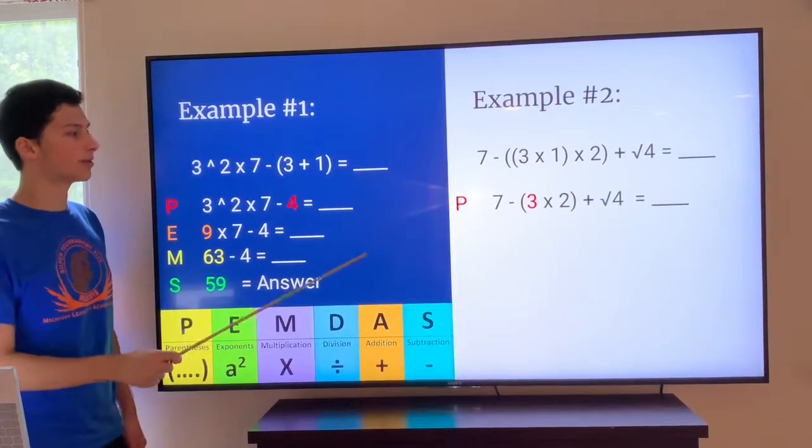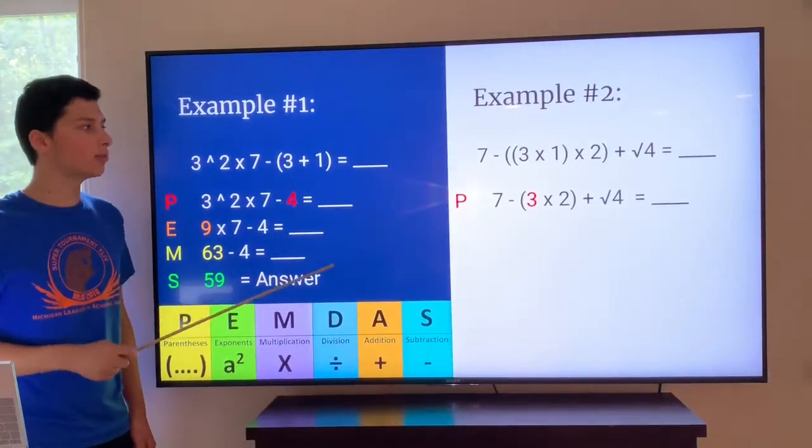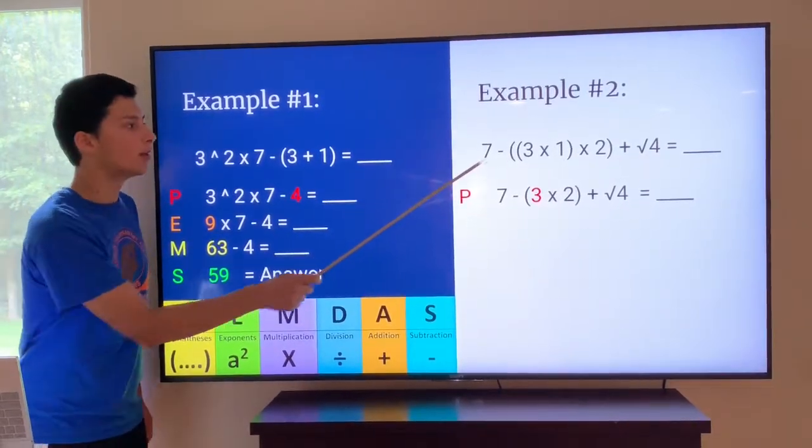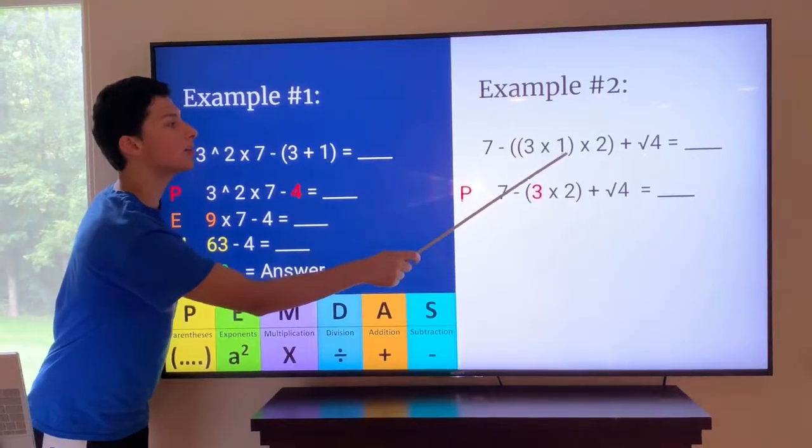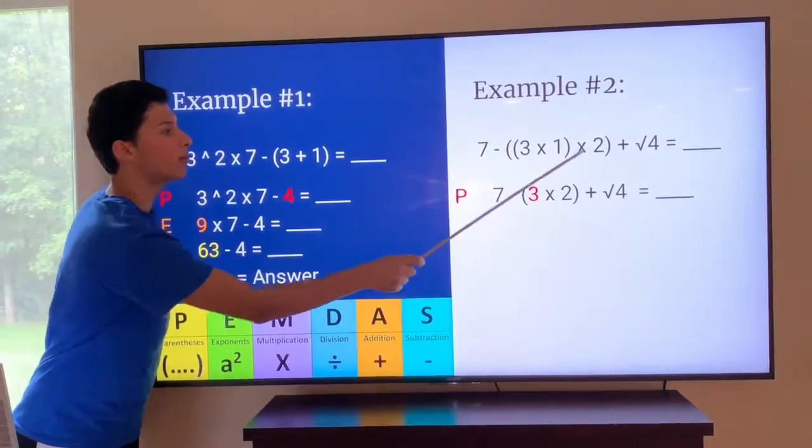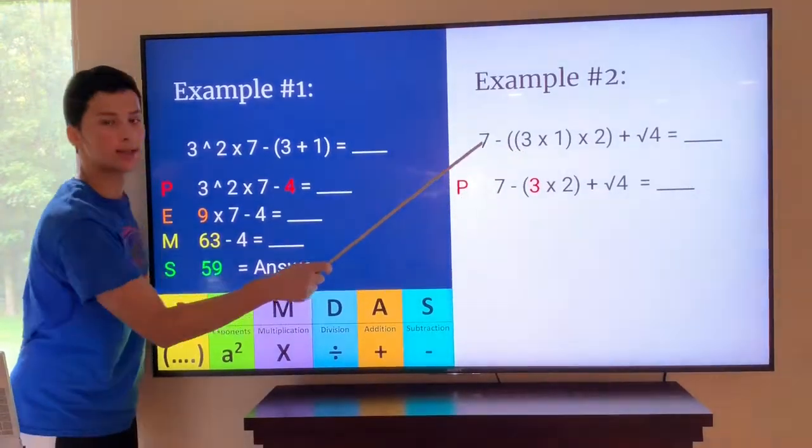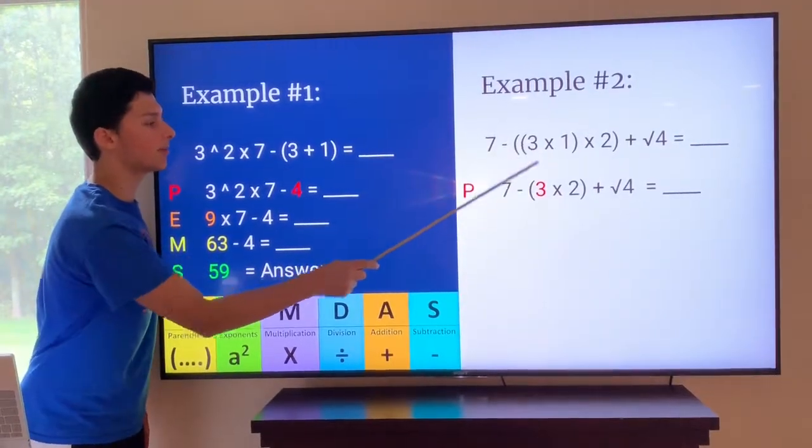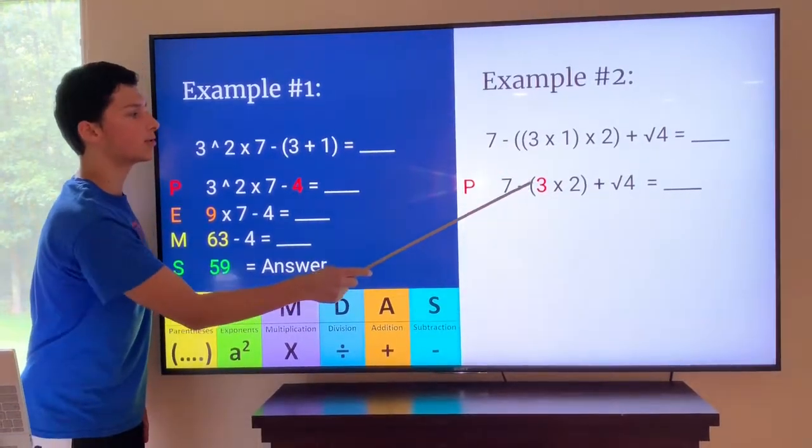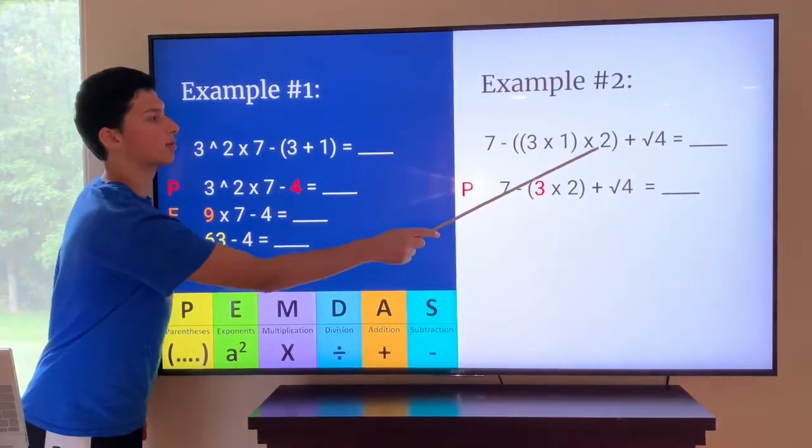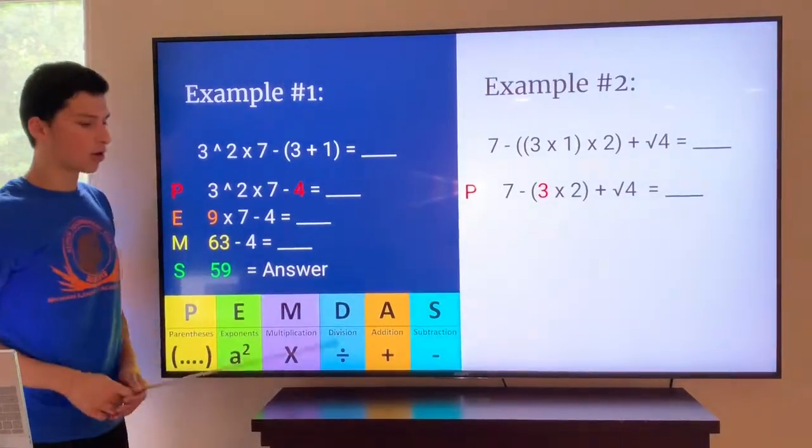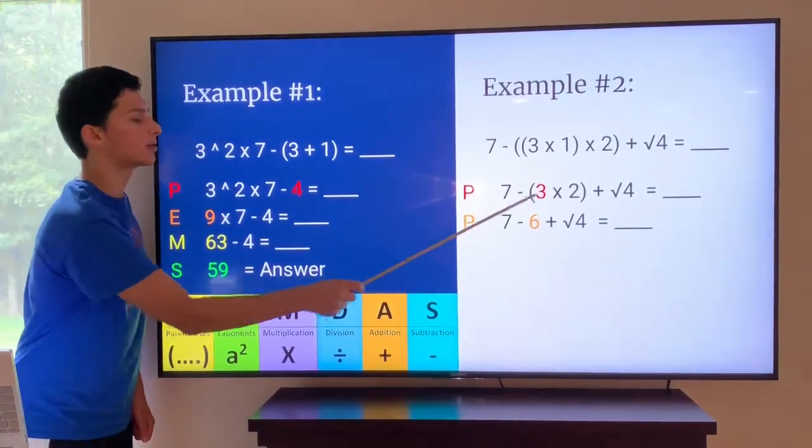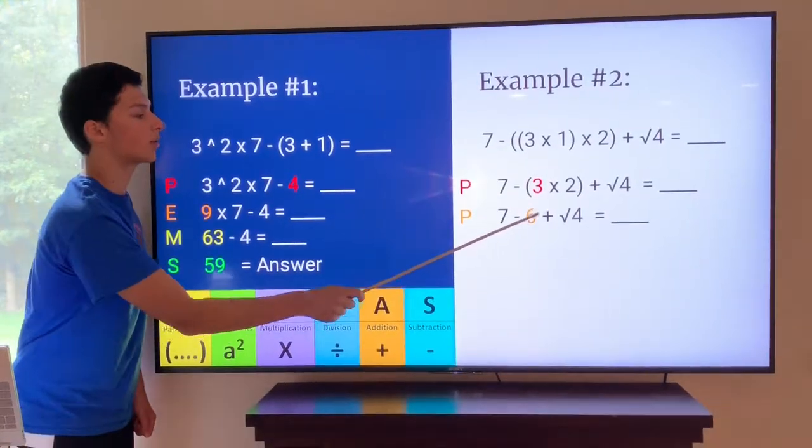We would begin with parentheses. Since there are two parentheses, we would go and begin with the one that is in the inner side. This pair of parentheses is inside this other pair, so we would do the one from the inside and move out. So three times one is three. So now we're simplified down to just three times two, because there's a times two there. So now we resolve the other parentheses. Three times two is six. Seven minus six plus square root of four.